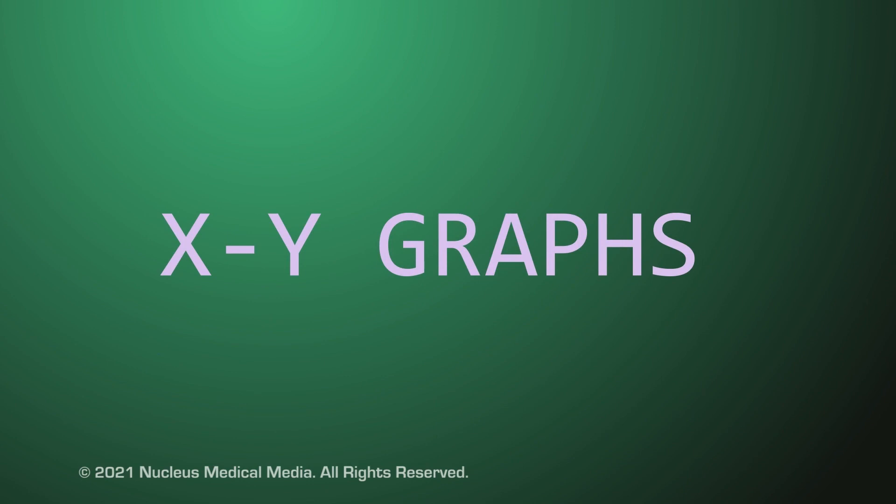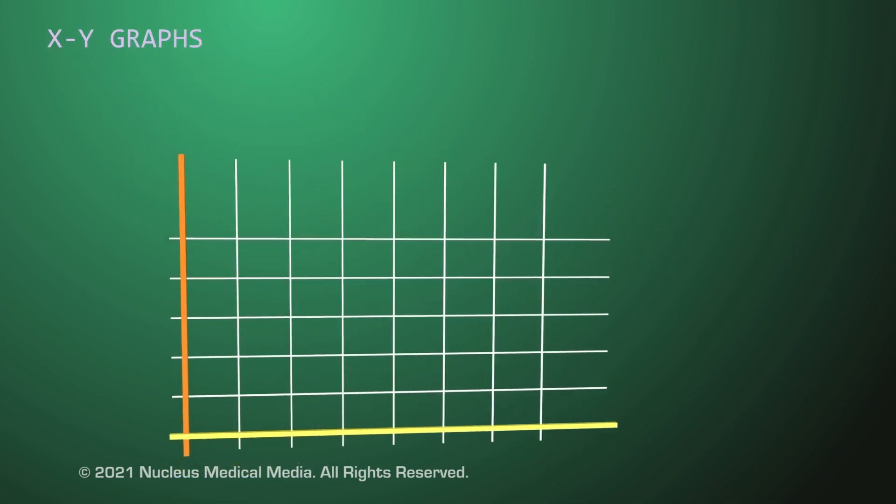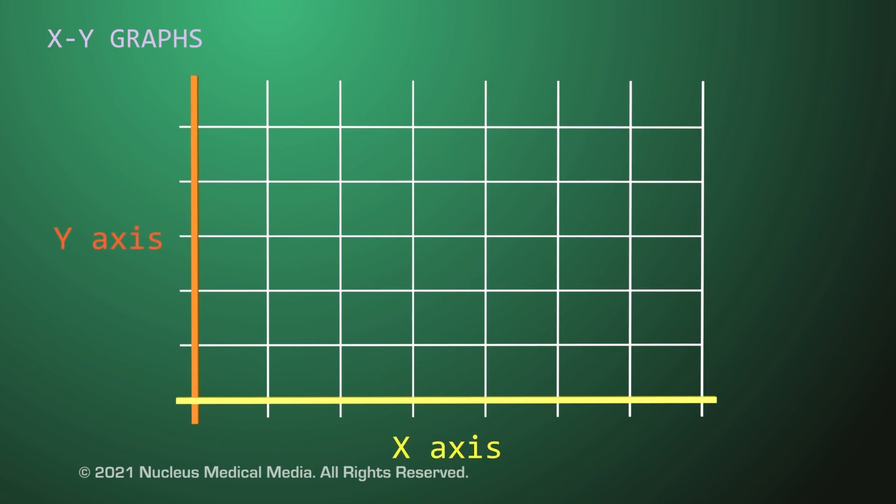First, we'll look at XY graphs. XY graphs, also known as scatter plots, look at how two events, or variables, are possibly related.